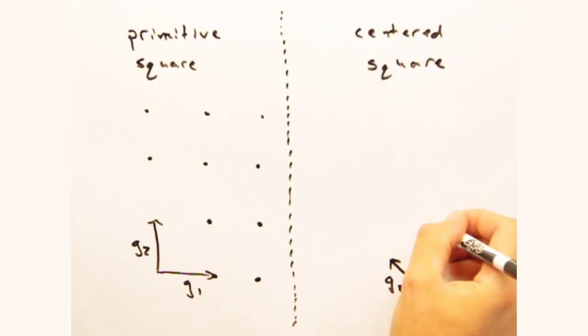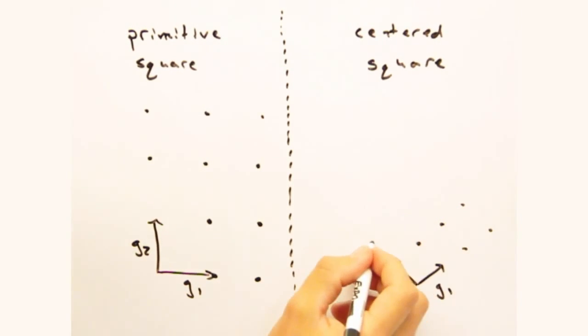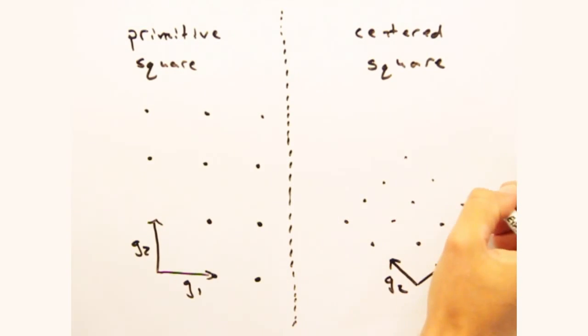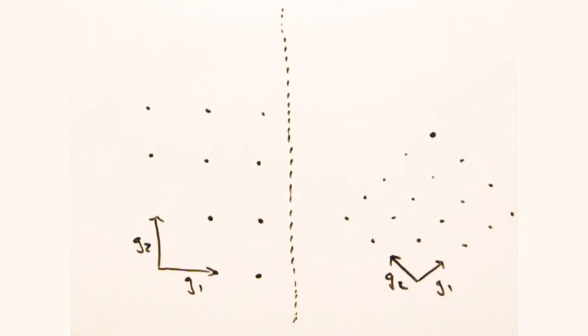Before anyone gets worried or confused, this is okay. At the end of the day, the reciprocal spaces could look vastly different as long as the intensities work out for both cases. And for that we look to the structure factor.